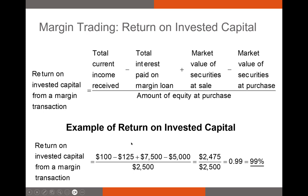For a quick example: we've received $100 in dividends and paid $125 in interest on our margin loan. At the sale point, we're selling our shares for $7,500, and our initial value when we bought them on margin was $5,000. With a 50% initial margin, our initial equity was $2,500. Solving this gives us $2,475 divided by $2,500, or 0.99 — a 99% return. A change in asset value from $5,000 to $7,500 nets us a 99% return because we levered up, increasing the return on our $2,500 of initial equity.